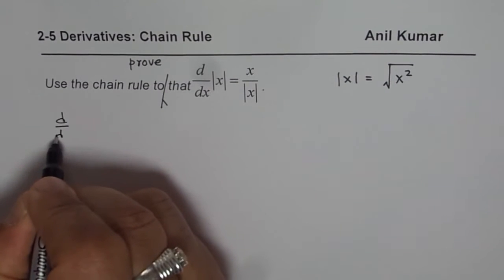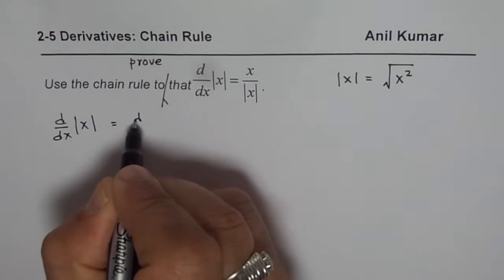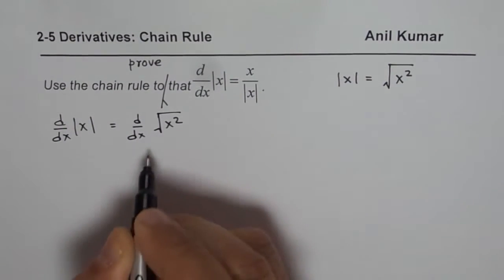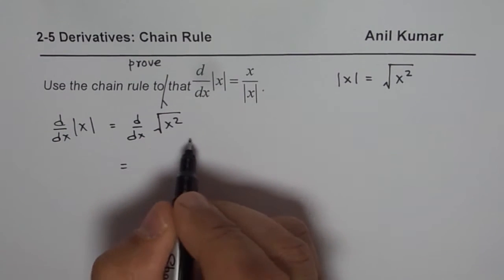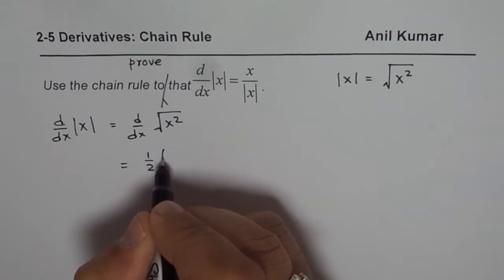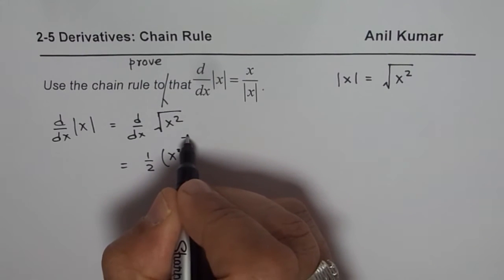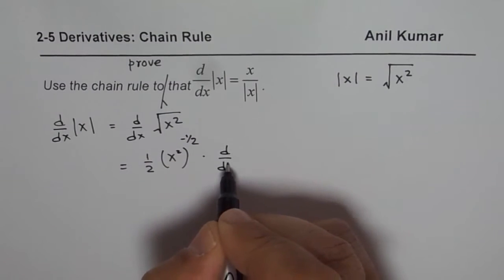So it is d of dx of absolute x could be written as equals to d of dx of square root of x square. So if you apply the derivative, so it is derivative of outside function, which is half, x to the square to the power of half minus 1, which is minus half, times derivative of x square.